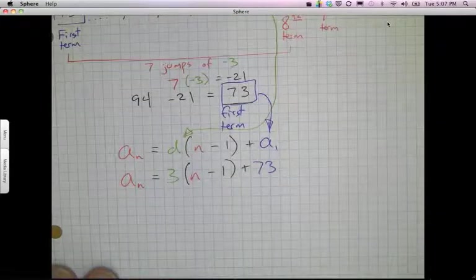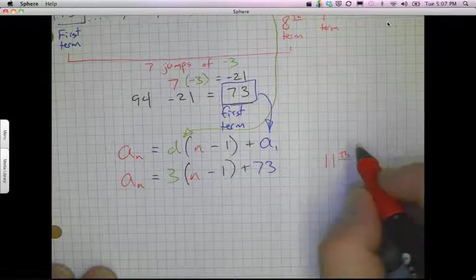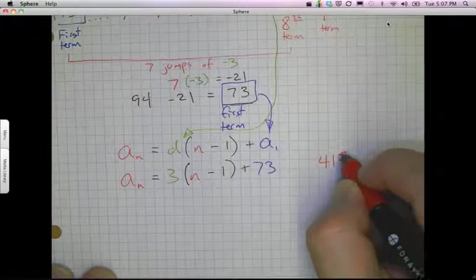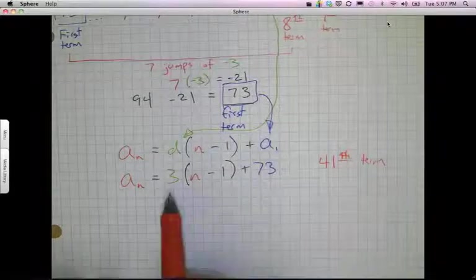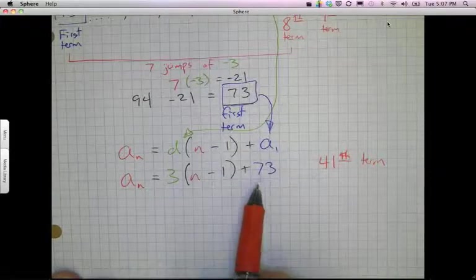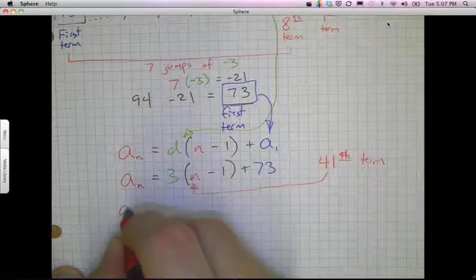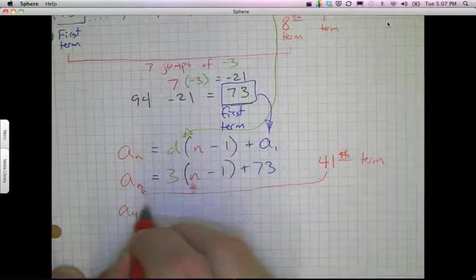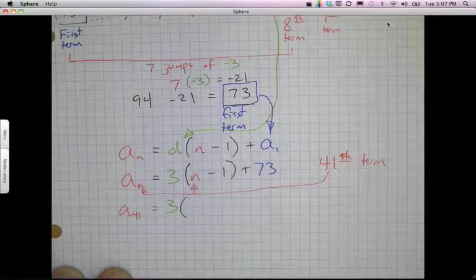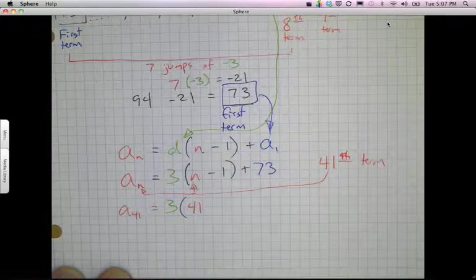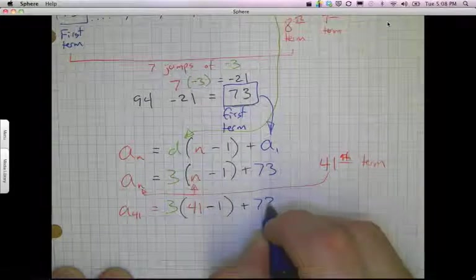If I wanted to use that to figure out what the 41st term was, let's make it a little bit harder. The 41st term. Then I could go through and I could plug in all those different numbers in there. And I've already got my growth and my first term. So all I need to do is take this 41 and replace it with my n. So I would say a to the 41, let's put it in both places. So a to the 41 is equal to 3 times my 41 minus 1 plus my 73. And there's the equation I've got to solve.